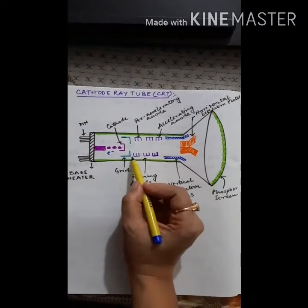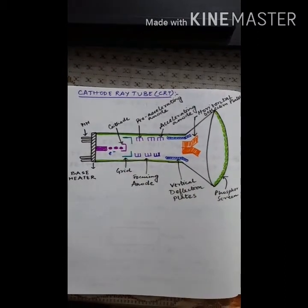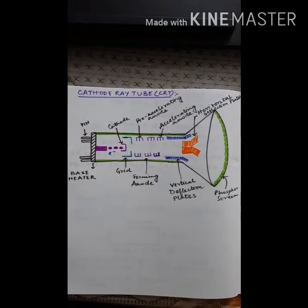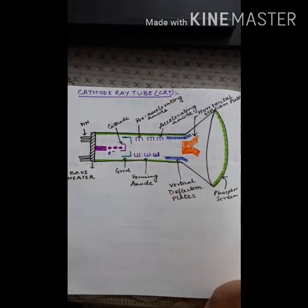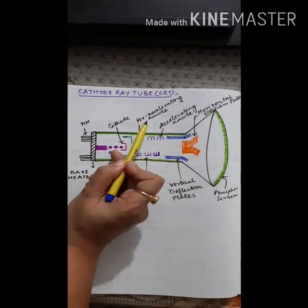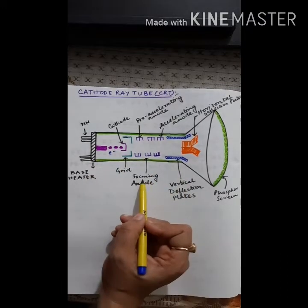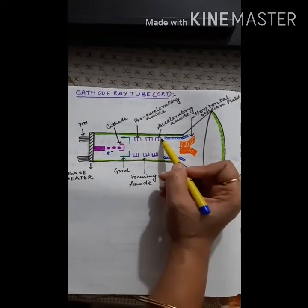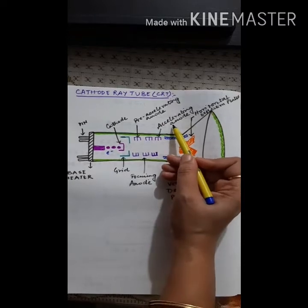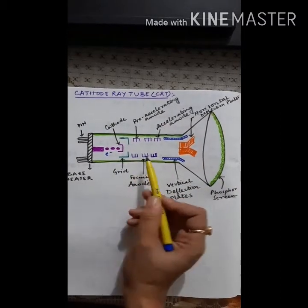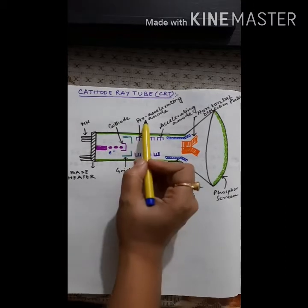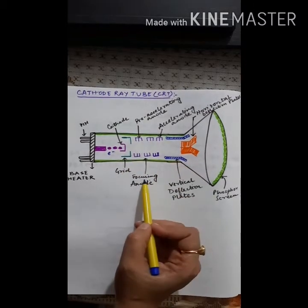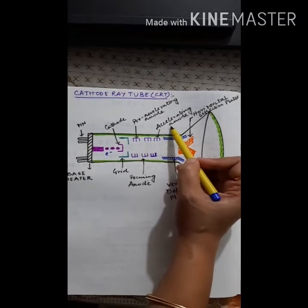After the cathode, there is a grid. After the grid there are three types of anode sections: first, the pre-accelerating anode; then the focusing anode; and after that the accelerating anode. These three anode sections each have three different responsibilities.